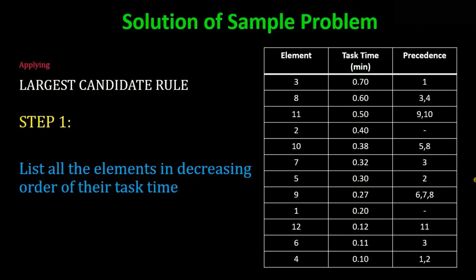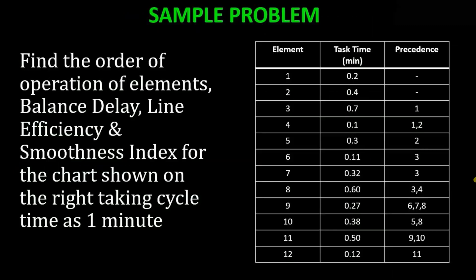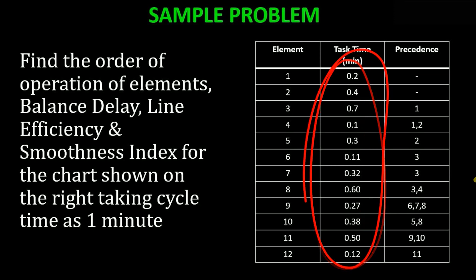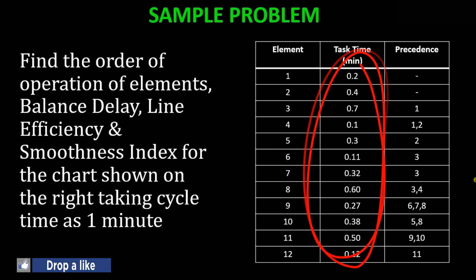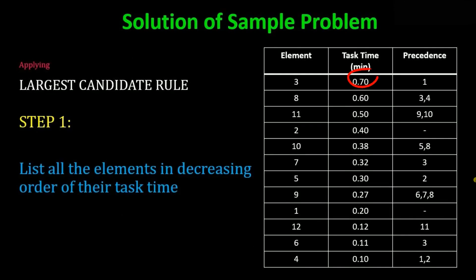Which rule do we need to apply? Obviously the Largest Candidate Rule. The first step says: list all the elements in decreasing order of task time. We need to arrange the work elements so that task time goes from largest to smallest. The maximum task time is 0.7, then 0.6, then 0.5, and so on. We arrange this column in decreasing order.